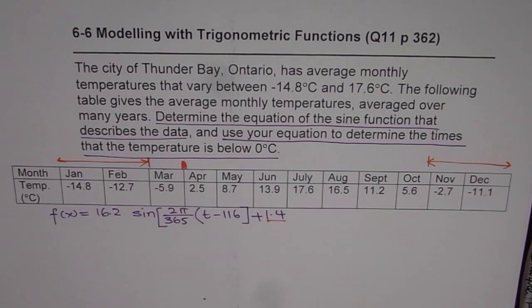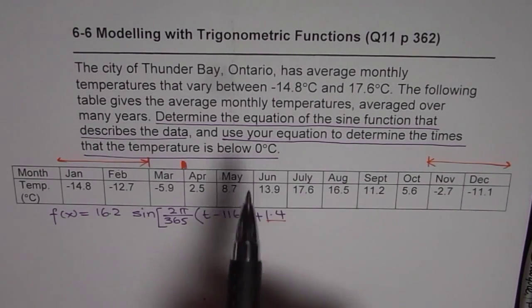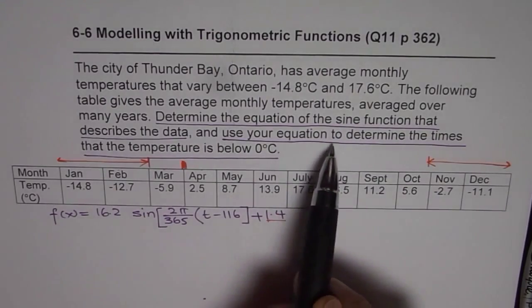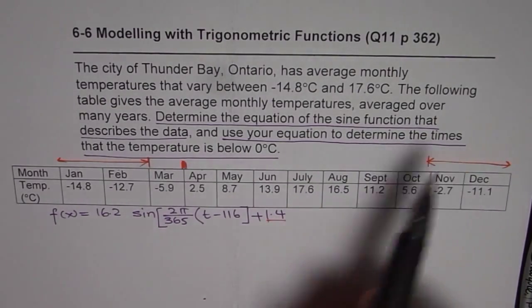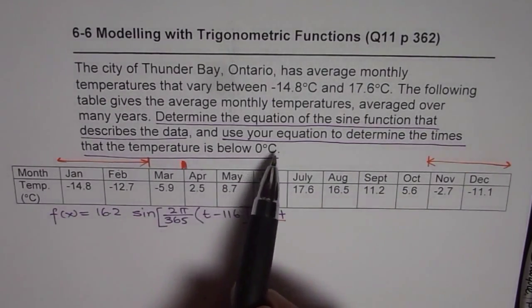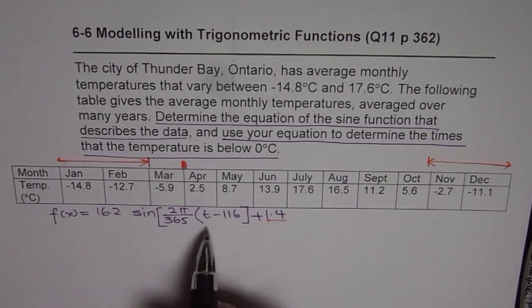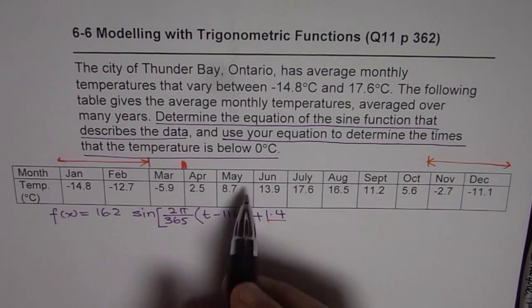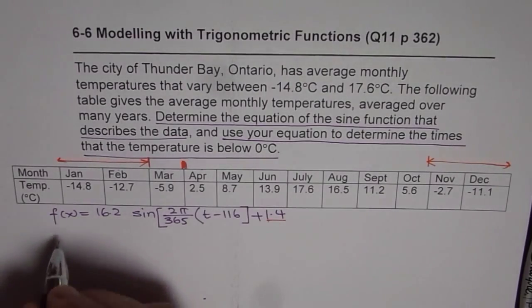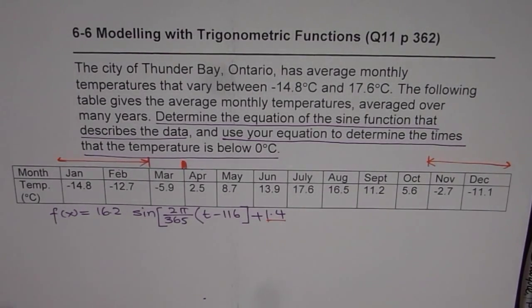Now, let's work into the solution for part B, which is use your equation to determine the times that the temperature is below 0 degrees centigrade. So we have to use this equation. Let's find the time when it is 0 degrees. That is to say, f of x is 0. So we will write here.